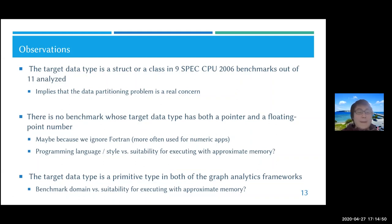The second observation is that there's no benchmark whose target data type has both a pointer and a floating point number at the same time. Maybe because we ignored Fortran, which is more often used for numerical applications. This raises another question: maybe the programming language and programming style used might affect the suitability of executing the application with approximate memory.